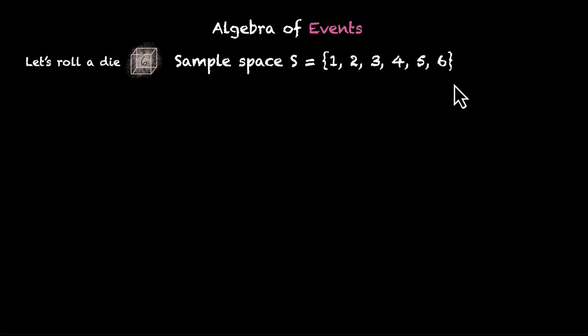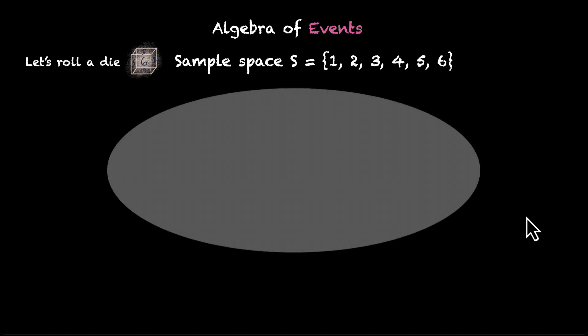This is what we have as a sample space: 1, 2, 3, 4, 5, and 6. Now, let's try to leverage our knowledge of sets and plot this sample space. Let's say this is our sample space and these are sample points: 1, 2, 3, 4, 5, and 6.